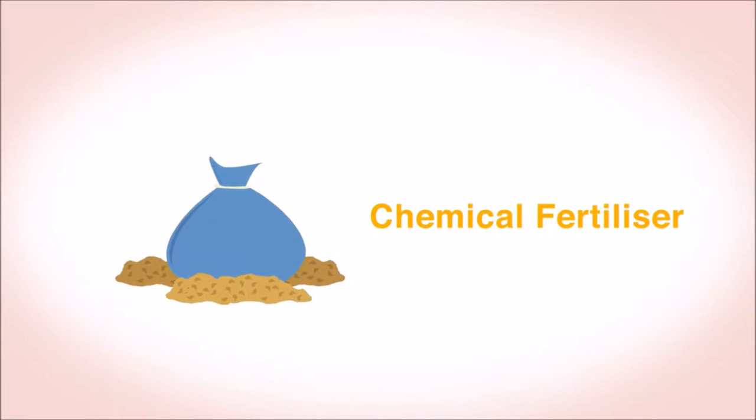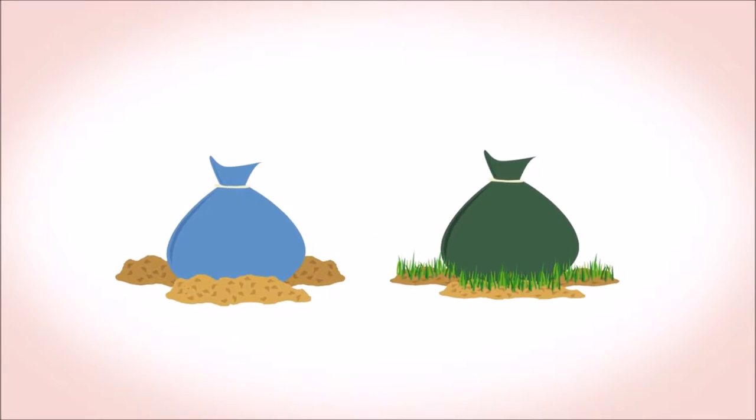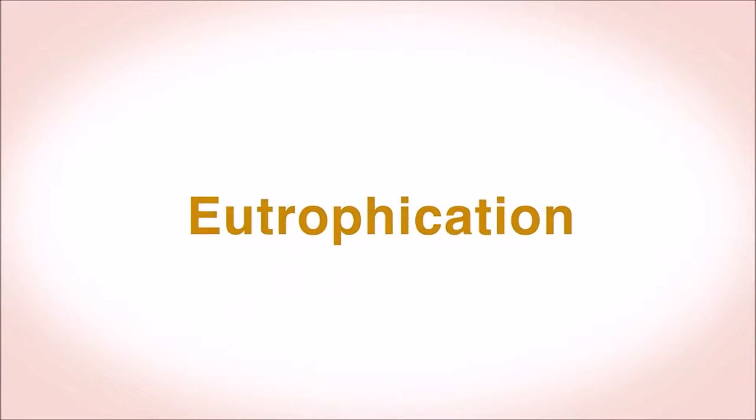Chemical fertilizers are much more soluble in water than organic manure-based fertilizers, so heavy rain can wash them into streams and lakes, causing eutrophication.